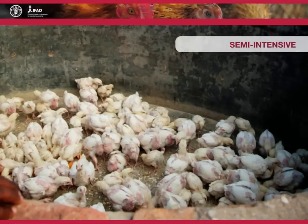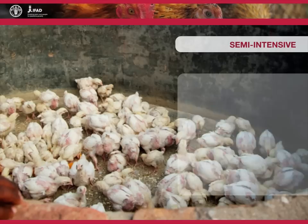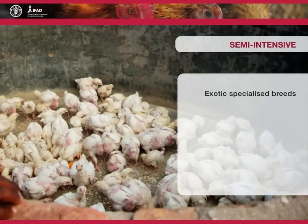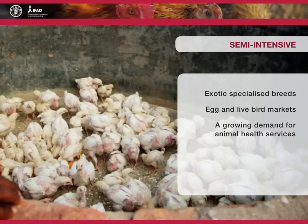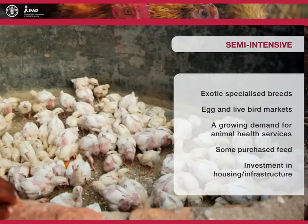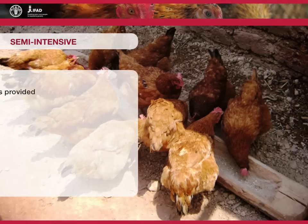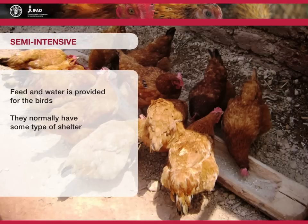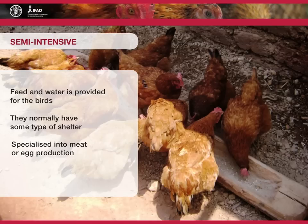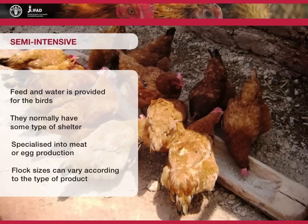Semi-intensive production systems are linked to markets, both for inputs and outputs, which are local and possibly regional. Semi-intensive production is characterized by the use of exotic specialized breeds, the presence of egg and live bird markets, a growing demand for animal health services, the use of purchased feed, and investment in housing and general infrastructure. Feed and water is provided for the birds, and they normally have some type of shelter. Many of these systems have specialized in meat or egg production, and producers have an interest in more productive poultry strains. Flock sizes can vary, with some producers keeping as many as 200 broiler birds, while those specializing in egg production may keep as few as 50 birds.